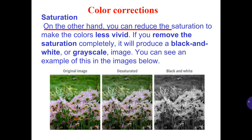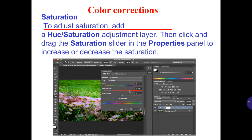On the other hand, you can reduce the saturation to make the colors less vivid. If you remove the saturation completely, it will produce a black and white or grayscale image. You can see an example of this in the images below: original image, desaturated, and black and white.